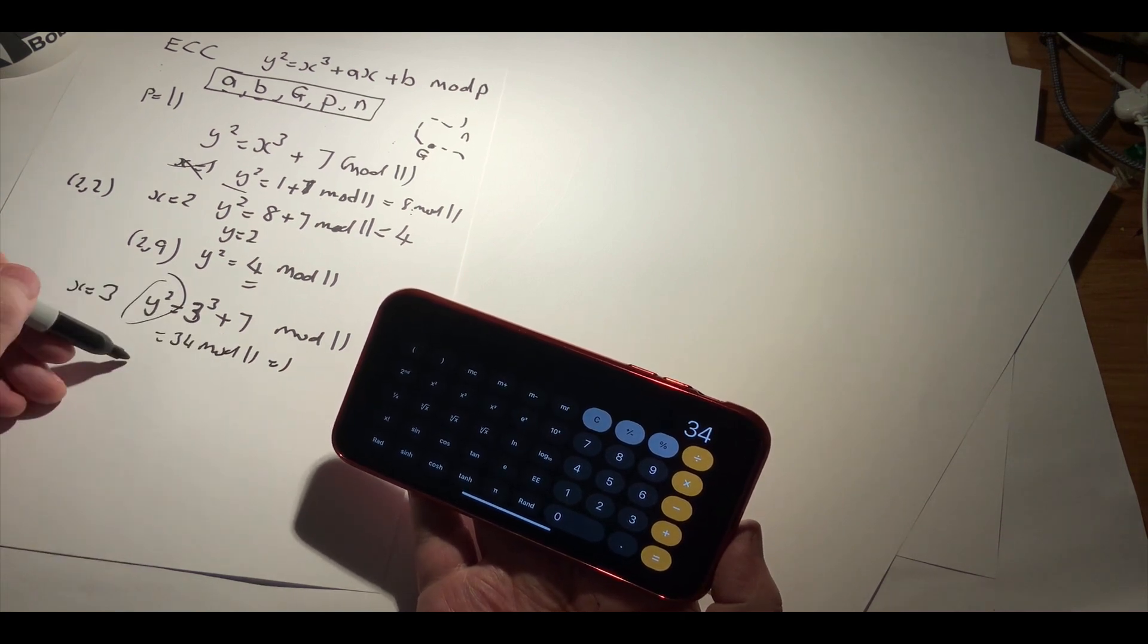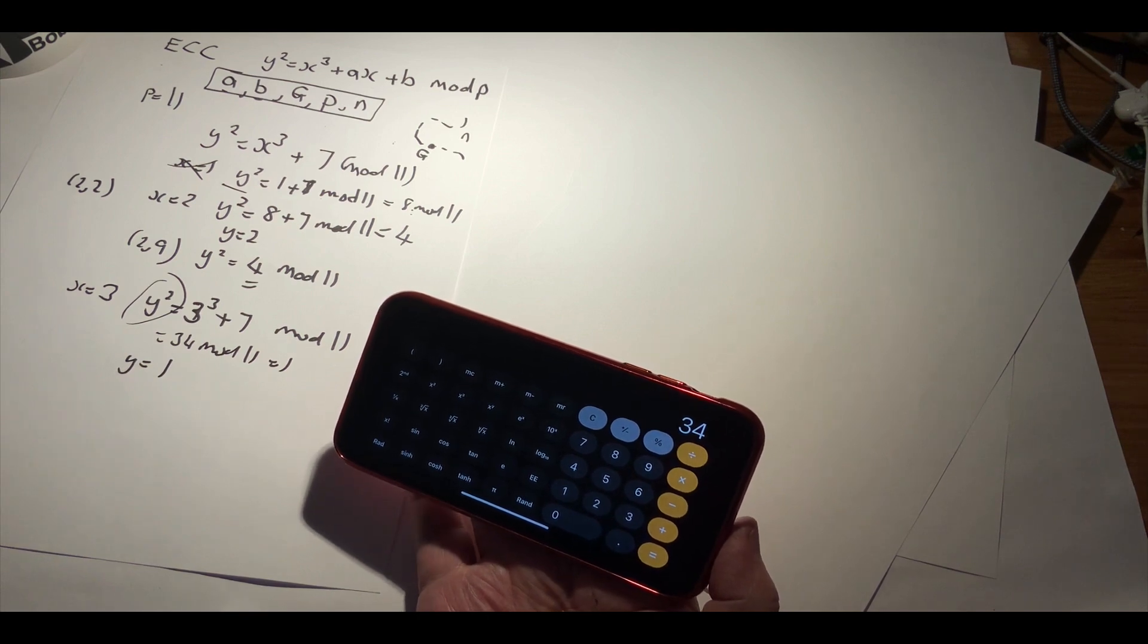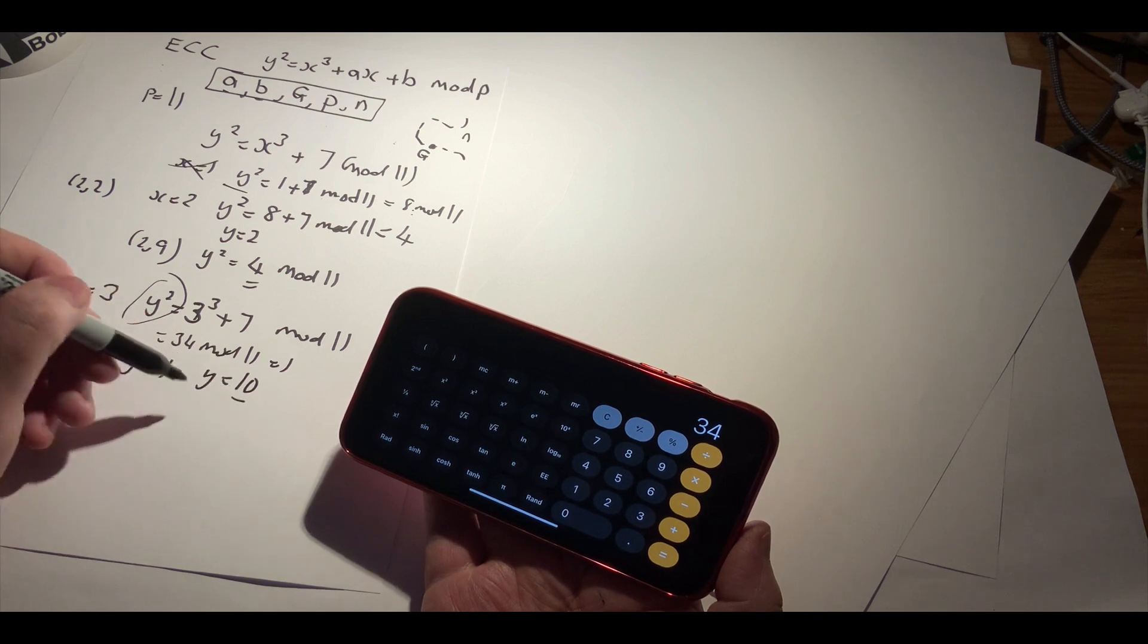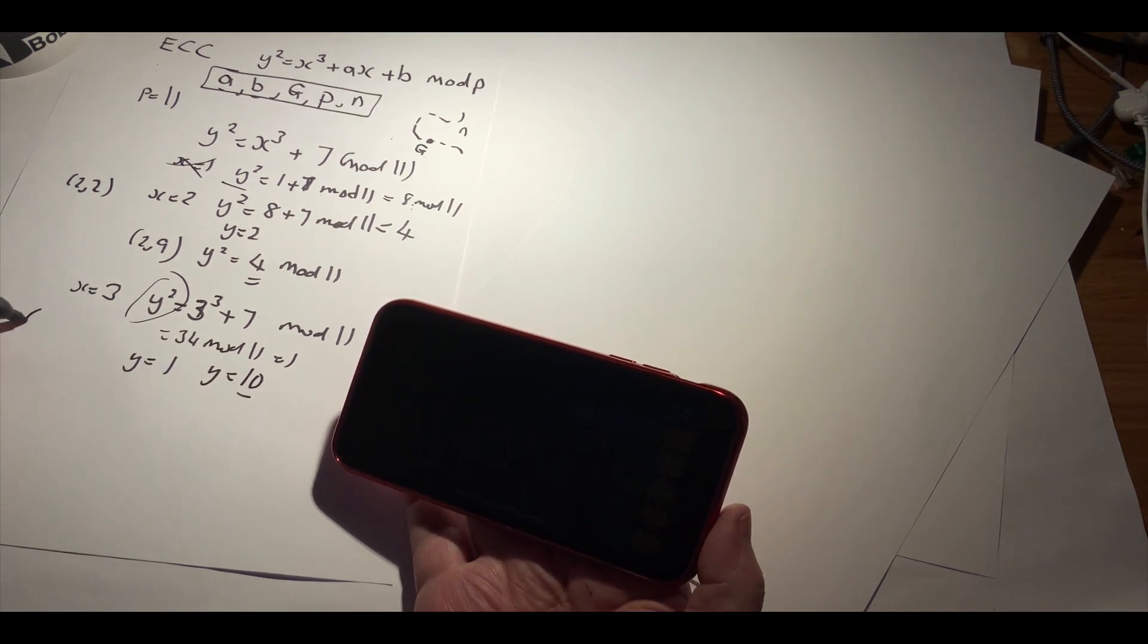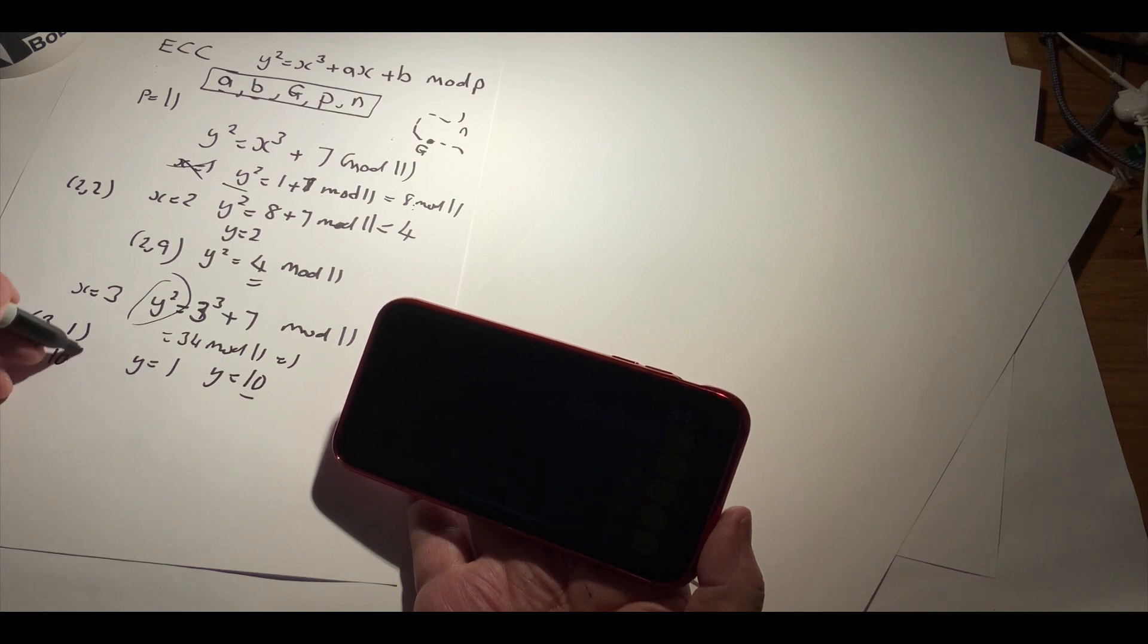And y squared equal to 1, the result of that is 1. There is also another value if we were to do it at 10. So we have two values here: 3, 1 and 3, 10.